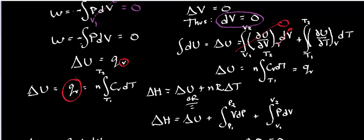In any case, the heat at constant volume is going to be the number of moles times the heat capacity at constant volume times dT, and you integrate that from T1 to T2.